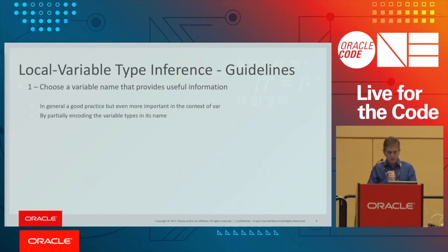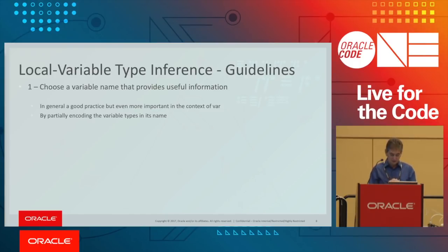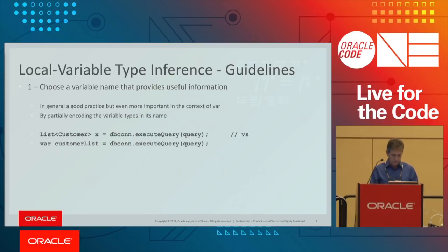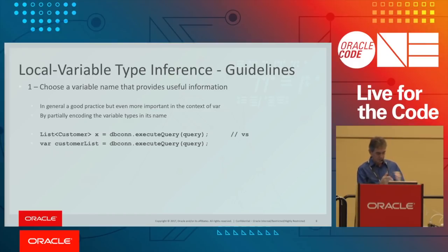I'll pick and choose some guidelines ranging from very good usage to not recommended at all. The first guideline is to choose a variable name that is meaningful. It's always good practice, but with var it's even more important. For example, a local variable named x that holds the result of a database query — a list of customers — is much better named customerList. That's a good use case for var.